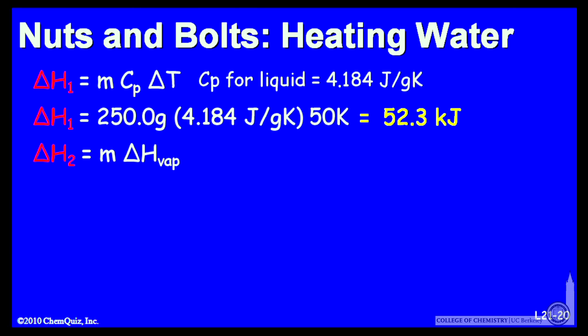The next step was the vaporization. So no temperature change, no heat capacity. All I need to know is the enthalpy of vaporization and the amount of water. So 250 grams of water and an enthalpy change for vaporization that I've written in terms of kilojoules per gram. It takes 2.26 kilojoules to vaporize a gram of water at 100 degrees C. So the total enthalpy change for that, 565 kilojoules.